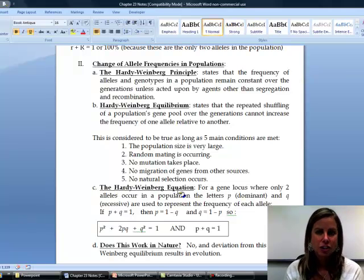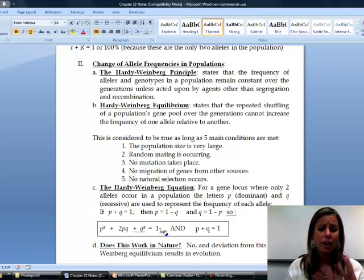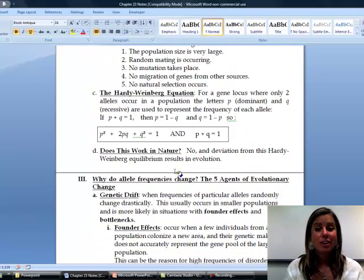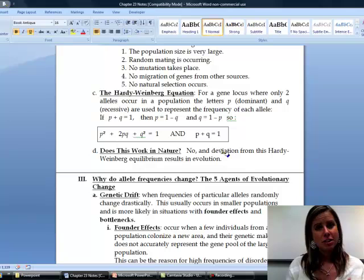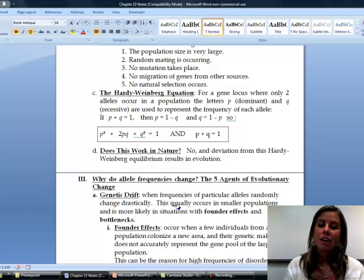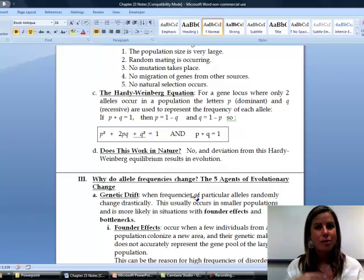So they came up with an equation to figure out allele frequencies in a population, and then you could come back and look at those frequencies and see if this population is evolving. So this is the equation right here, and I'm just going to show it to you briefly here because we're actually going to do this in lab next week where we're actually going to take all of these apart and look at the actual calculations. So does this work in nature? No. And every time you deviate from Hardy-Weinberg equilibrium, that's when you end up with evolution happening. In the next video, I'm going to talk about why allele frequencies change and what that means is how the Hardy-Weinberg conditions can be violated.